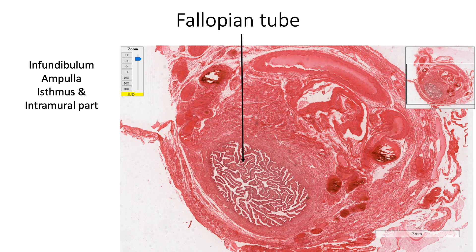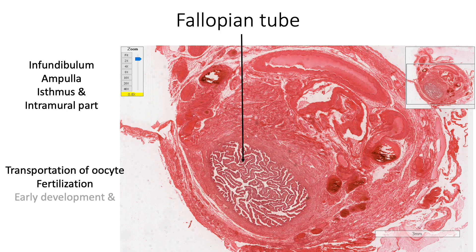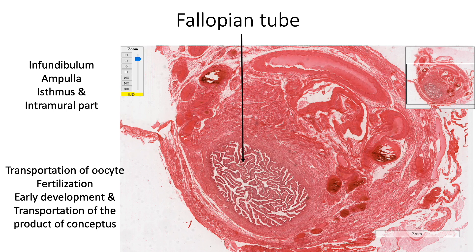The fallopian tube helps in transportation of the ovulated oocyte and forms the site of fertilization. It helps in nourishment and early development of the conceptus through the stages of cleavage, morula, and blastocyst, and helps in transportation of the conceptus to the uterus for implantation.